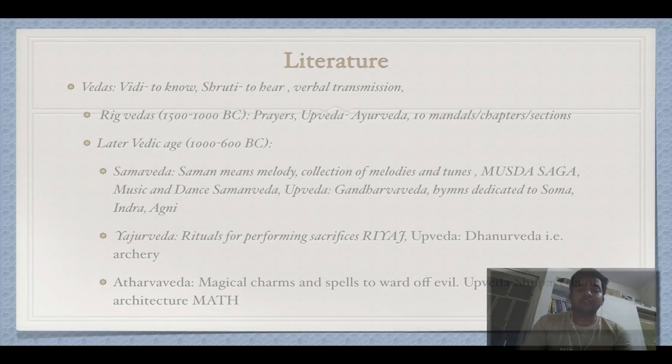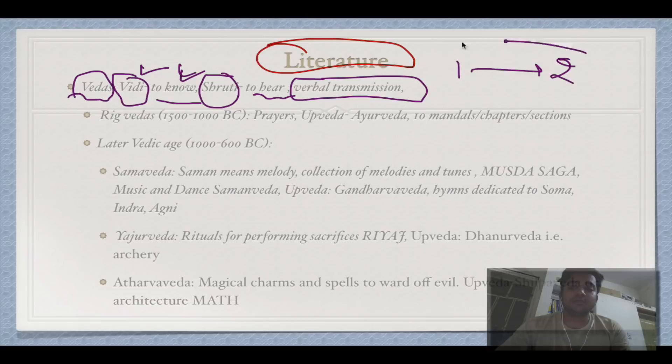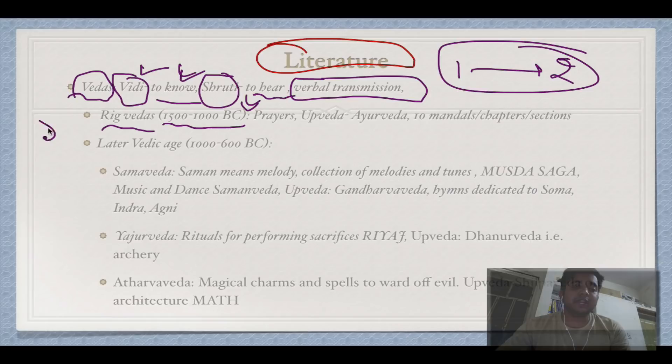First is the Vedas. 'Veda' literally comes from 'Vidi', meaning to know — that is, knowledge or Shruti, meaning to hear, referring to verbal transmission from one generation to another. The Rigveda was written around 1500 to 1000 BC. The first eight mandals were written in this period and deal with prayers. Its Upveda is Ayurveda, which deals with medicine.